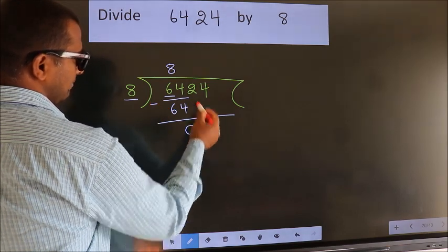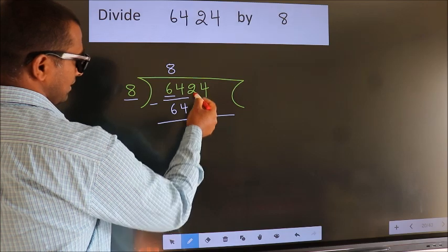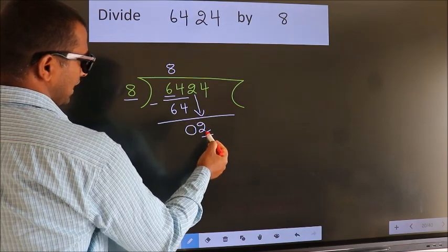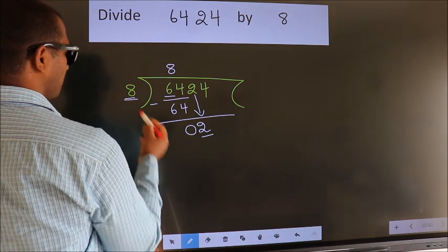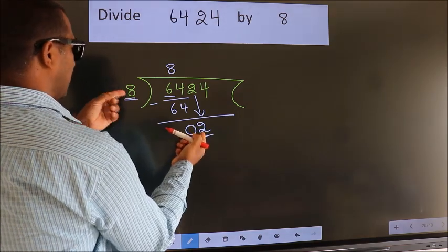After this, bring down the beside number. So, 2 down. Here we have 2, here 8. 2 smaller than 8.